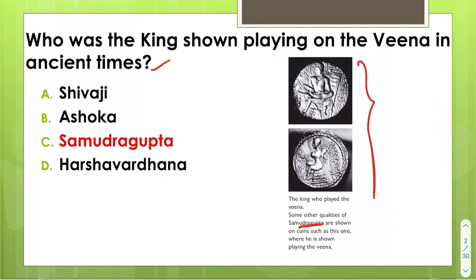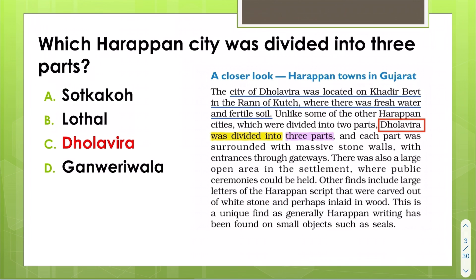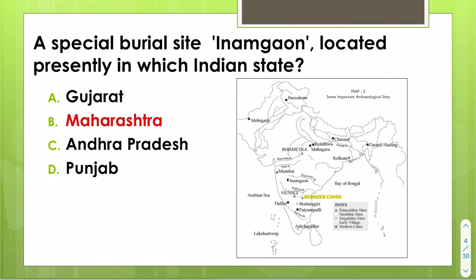The Harappan city was divided into three parts. Usually a Harappan city was divided into two parts, but in Dholavira it was divided into three parts. A special burial site — Inamgao — is located presently in which Indian state?